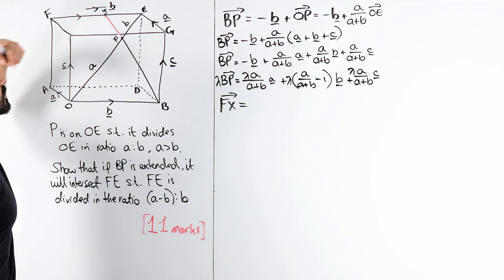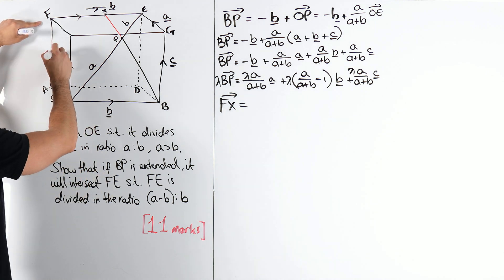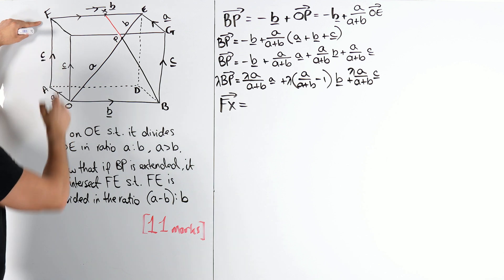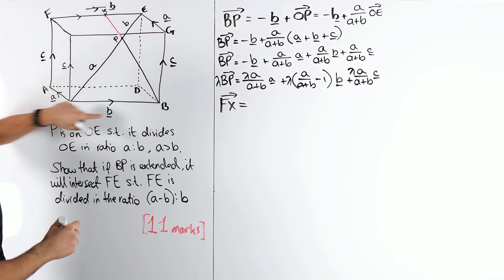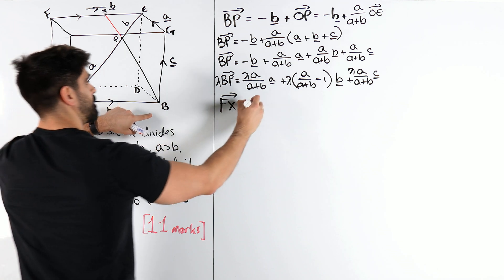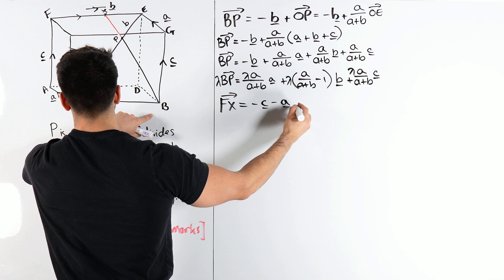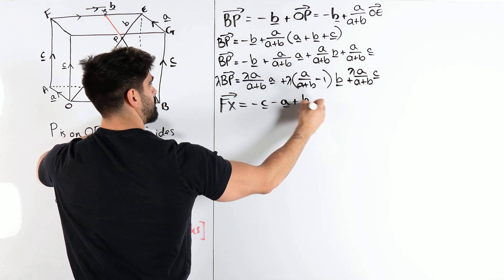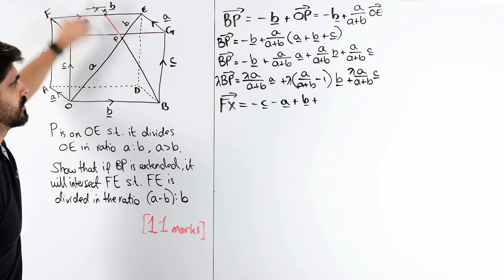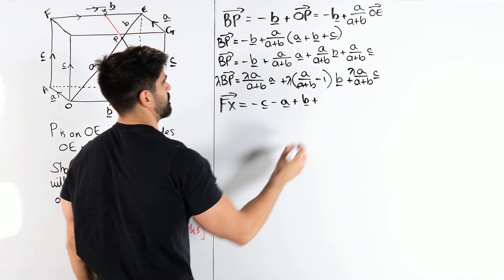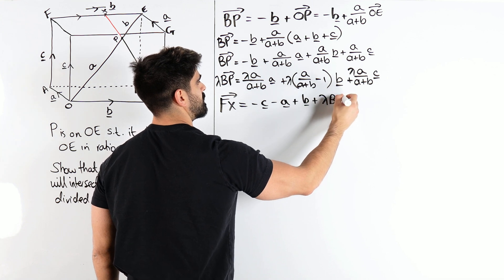To go from F to X, I need to use directions that I know. And obviously, we're going to have to use BP. I'm going to go down, down, across, up. I don't feel like there's another way you could do that. I was going to say around here, but that's silly, because we have BX. So, remember, this is C. So, we're going to go minus C, minus A, plus B. So, minus C, minus A, plus B. And then, we're going to add all of this. Lambda, B, P.